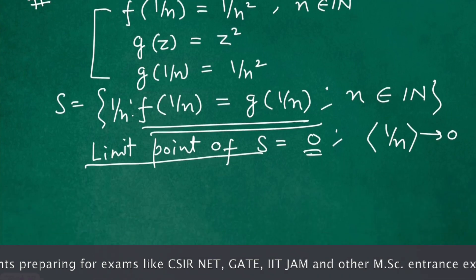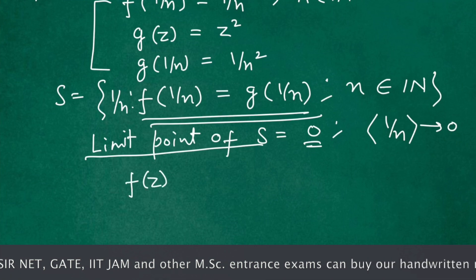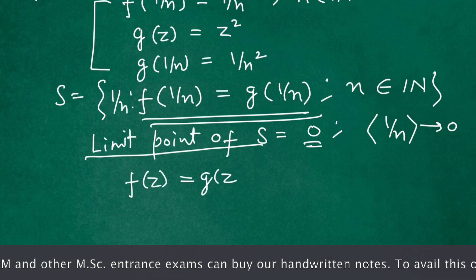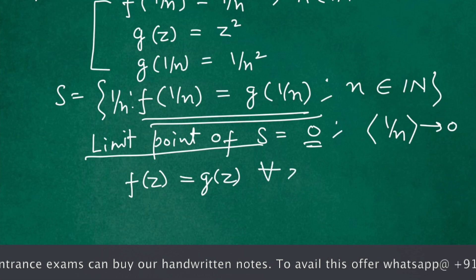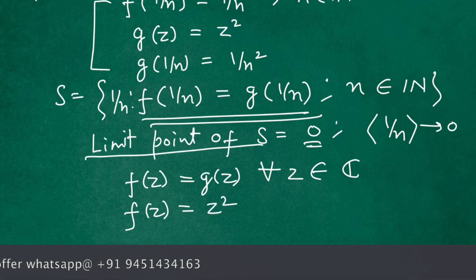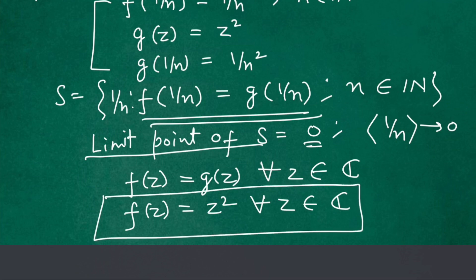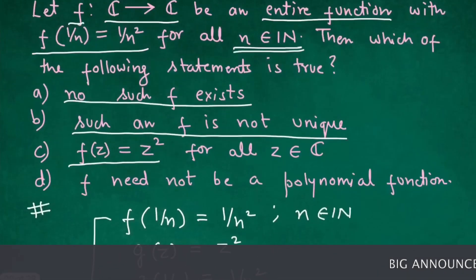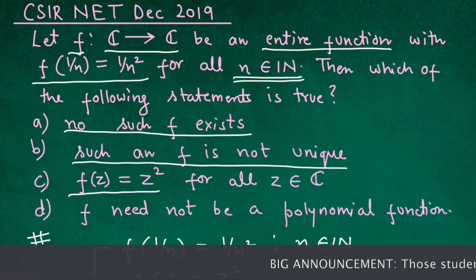From identity theorem we can say that function f(z) equals g(z) for all z belongs to complex plane C, and function g(z) is z². So f(z) equals z² for all z belongs to C. We can see that option c is correct.